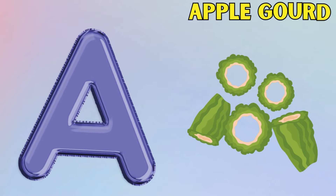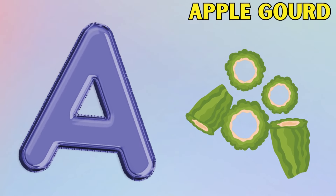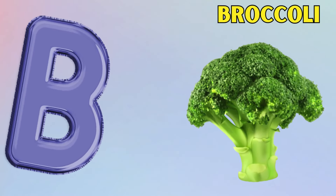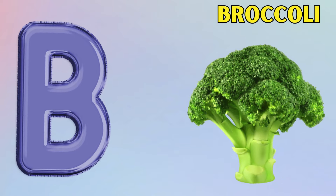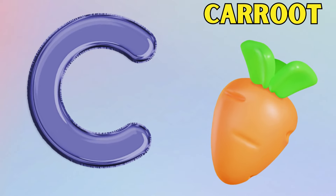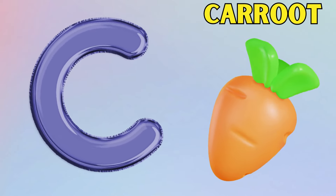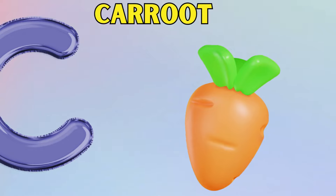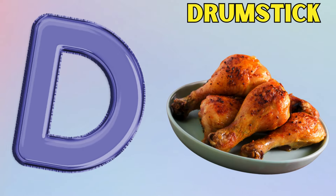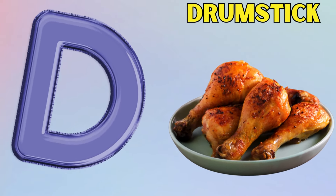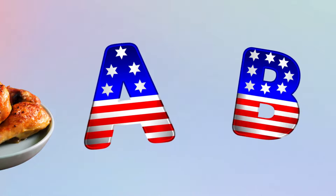A is for apple gourd, apple gourd. B is for broccoli, broccoli. C is for carrot, carrot. D is for drumstick, drumstick.